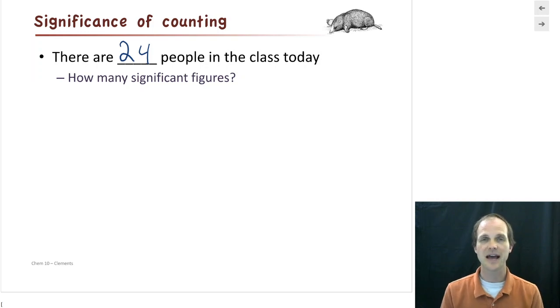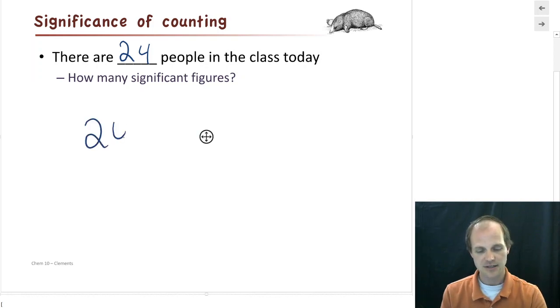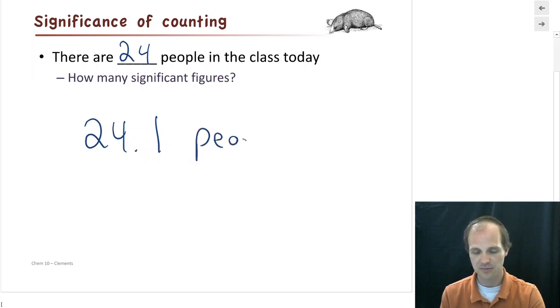Remember, significant figures tell us about how we measured the number. How well did we do? Is there any chance that if I went around the room, that I would find something different in that last next digit other than a zero? Would I ever find 24.1 people in this room? And the answer is no.